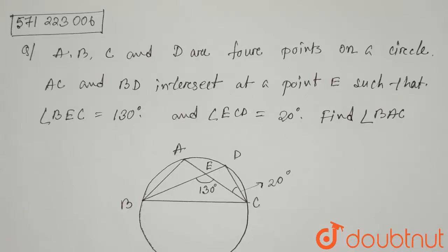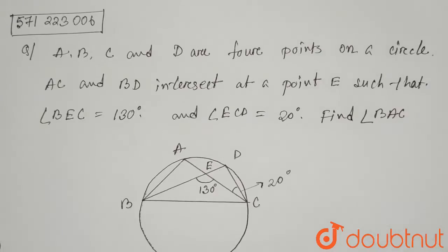Hello everyone. The question is: A, B, C and D are four points on a circle. AC and BD intersect at point T such that angle BTC is 130 degrees and angle ECD is 20 degrees. Find angle BAC.